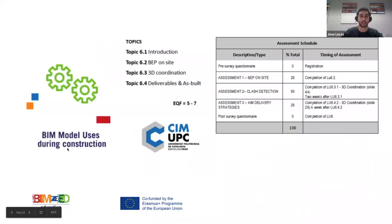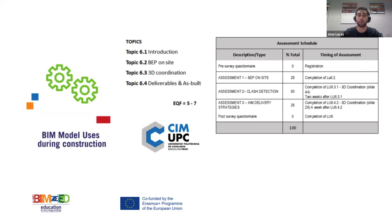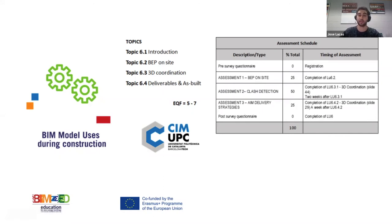Learning unit 6 is about BIM model uses during construction. We are not talking about budgeting or LCA here — just what the BIM uses are during the construction phase on site. Topics include the BEP, 3D coordination, clash detection, and quantification. Assessments cover the BEP, clash detection, and BIM delivery strategies.